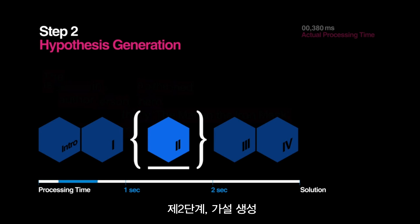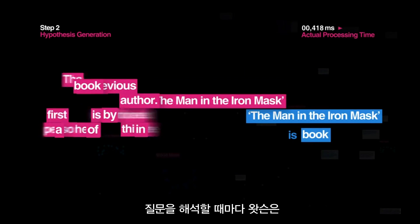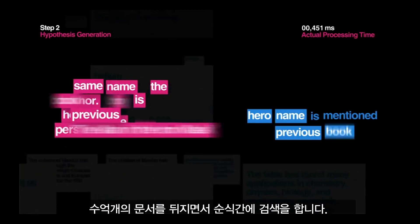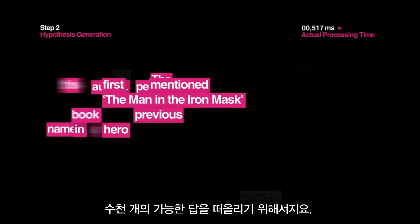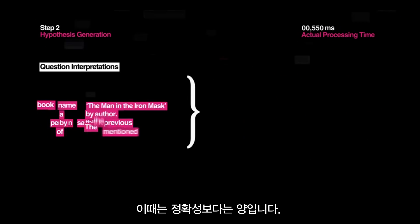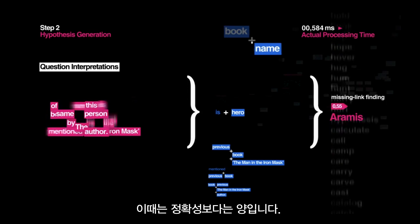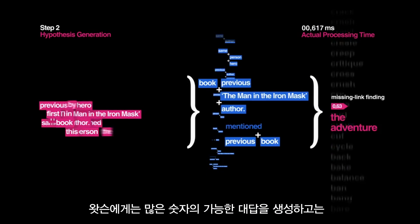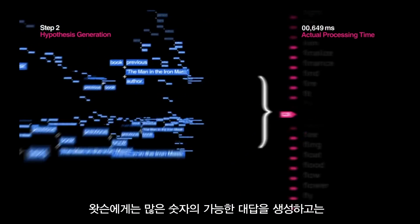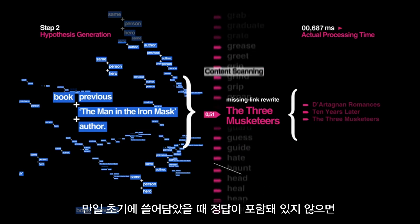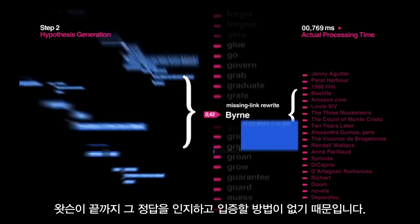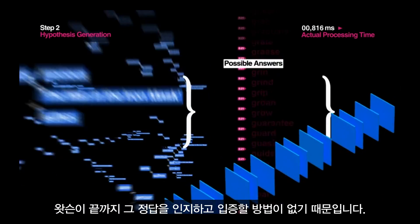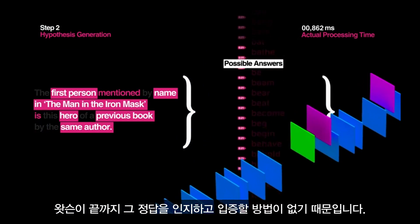Step 2: Hypothesis Generation. For each interpretation of the question, Watson quickly searches through hundreds of millions of documents to come up with thousands of possible answers. At this point, quantity trumps accuracy. It's more important for Watson to generate a large number of possible answers and narrow them down from there, because if the correct answer isn't included during the initial sweep, there is no possible way for Watson to identify and justify the right answer at the end.